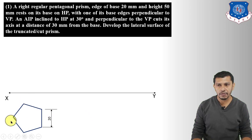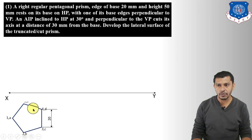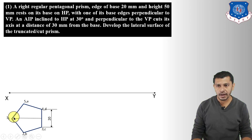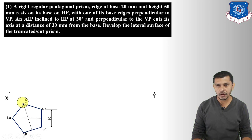Label the pentagon vertices 1, 2, 3, 4, 5 for the top face and A, B, C, D, E for the base. To show the axis, connect the midpoint of one base edge to the opposite corner, and repeat for another edge; their intersection gives the center, which is the top view of the axis.